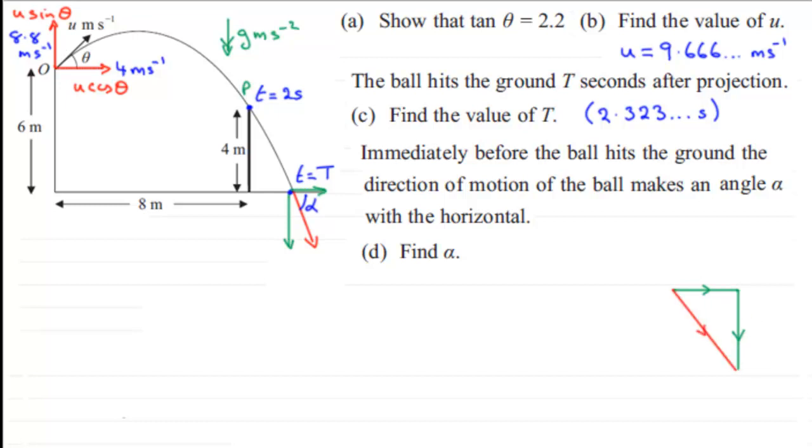So angle alpha is going to be this angle in here. And to get alpha, if I know these two velocities, I can then use trigonometry to work out what alpha is. So that's where we're going. Now I know what this horizontal one is because the horizontal speed always remains exactly the same because there's no acceleration in the horizontal sense. And we worked out that it was 4 meters per second earlier on in the problem. So we'll just put that in as 4 meters per second.